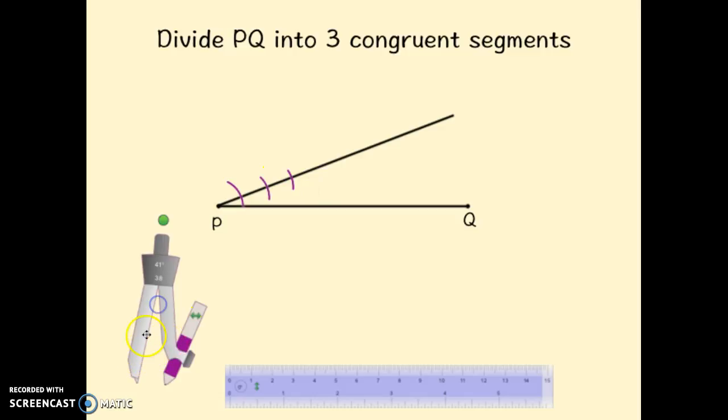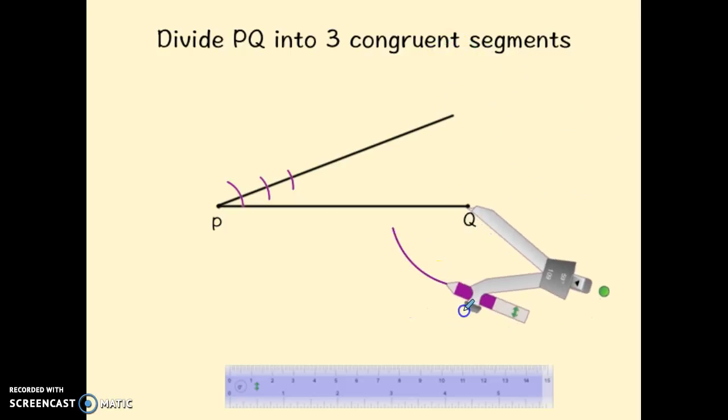So I'm going to take my compass, and I'm going to measure from P out to my furthest arc, which we know should be three times the distance. And it's about that length. I'm then going to move that distance to Q. And we are going to try to construct the same sort of shape on the other side of the line. So from Q, I'm going to draw an arc that represents that same distance.